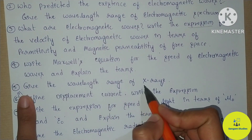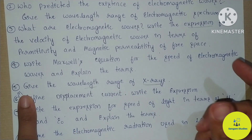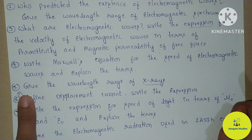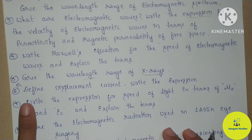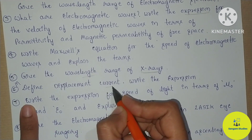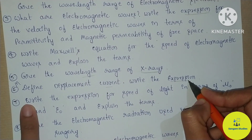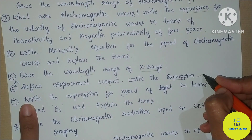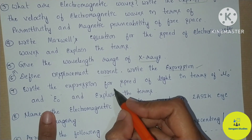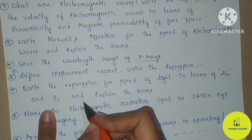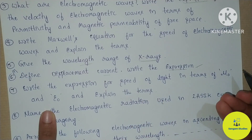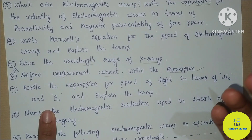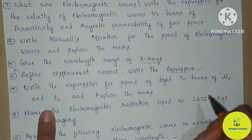Give the wavelength range of X-rays — this is a one mark question. You can also use the wavelength range of electromagnetic waves. Next: displacement current — write the expression for displacement current — two marks. Also write the expression for the speed of light in terms of mu0 and epsilon0 and explain the terms — again, the speed of light in terms of mu0 and epsilon0 expression, two marks.